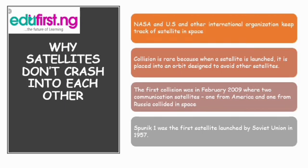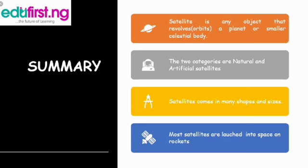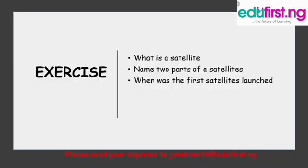In summary: a satellite is any object that revolves or orbits a planet or a smaller celestial body. The two categories are natural and artificial satellites. Satellites come in many shapes and sizes, and most are launched into space on rockets. Exercise: number one, what is a satellite? Number two, name two parts of a satellite. Number three, when was the first satellite launched?